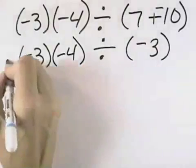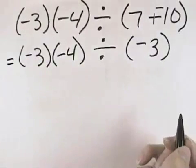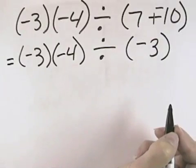Following the order of operations, that finishes our grouping symbols, and we're ready to move on. There are no exponents, so we have multiplication and division as they occur from left to right.